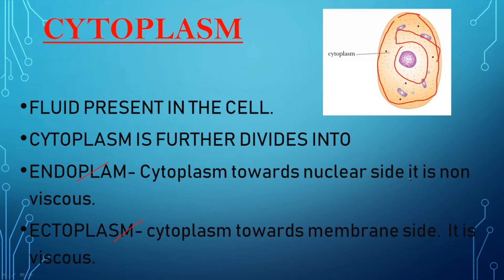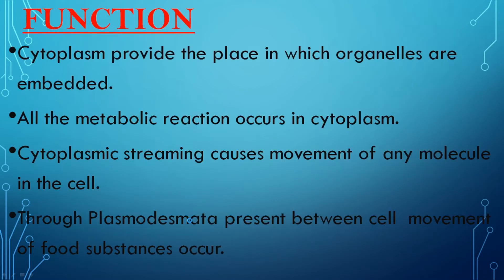Cytoplasm that is towards the nuclear side is endoplasm, and it is non-viscous — meaning its density is not high. And the cytoplasm that is towards the membrane side is called ectoplasm, and it is viscous — its density will be high.